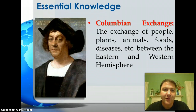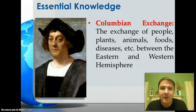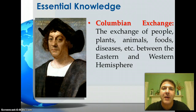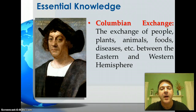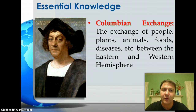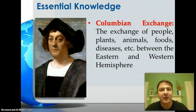Our essential knowledge centers on an important term: the Columbian Exchange. Columbian refers to Columbus, and an exchange is a trade or a swap. The historiography of this term goes back to the early 1970s, when historian Alfred Crosby wrote a book called The Columbian Exchange, describing the exchange of people, plants, animals, foods, and diseases — good things and bad things — between the Eastern and Western hemispheres. Columbus opened a door that hadn't been opened before, and through that door have passed people, plants, animals, foods, and disease.